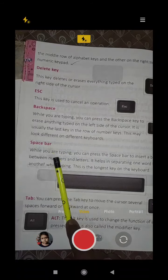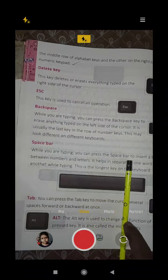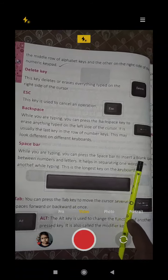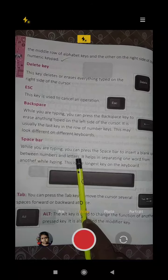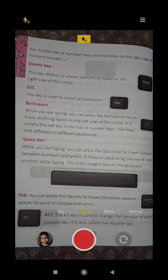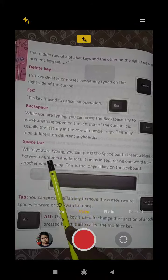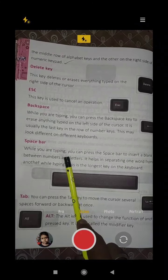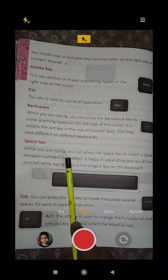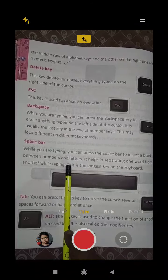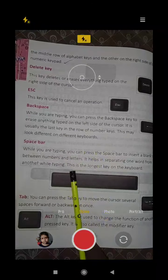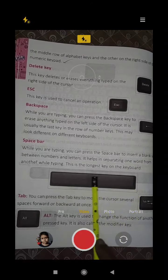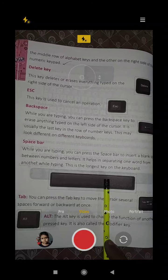Now the space bar. While you are typing, you can press the space bar to insert a blank space between numbers or letters. This is the longest key on the keyboard, the biggest key on a keyboard.